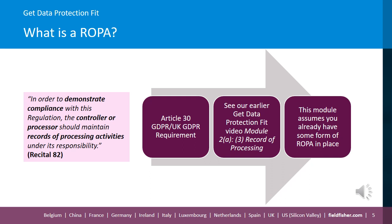Typically, a ROPA should include, as a minimum, your organisation's name and contact details, whether it is a controller or a processor, and where applicable, the joint controller, their representative and the DPO, the purposes of the processing, a description of the categories of individuals and of personal data, the categories of recipients of personal data, details of transfers to third countries including a record of the transfer mechanism safeguards in place, retention schedules, and a description of the technical and organisational security measures.